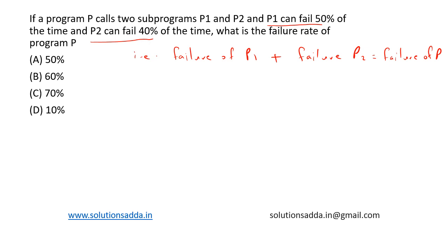So, the final answer will be as follows. That is, failure of P1 plus failure of P2 minus failure of P1 intersection P2.